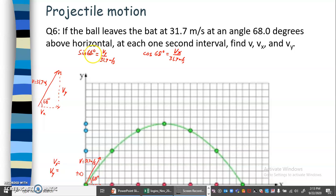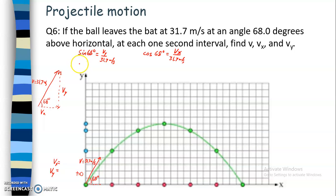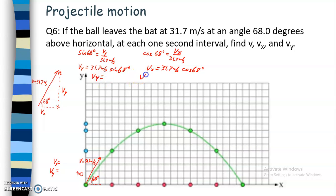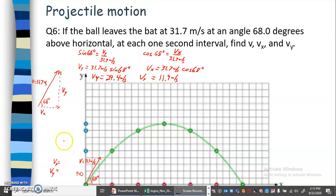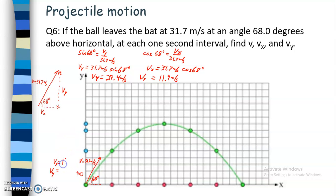Here I've written out sine and cosine of 68 degrees applied to this triangle. Multiplying 31.7 meters per second through both equations gives vy equals 31.7 meters per second times the sine of 68 degrees, and vx equals 31.7 meters per second times the cosine of 68 degrees. Calculating those: v sub x is 11.9 meters per second, and v sub y is 29.4 meters per second — both at t equals zero seconds.